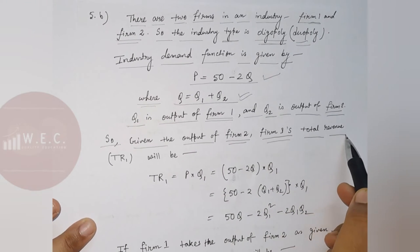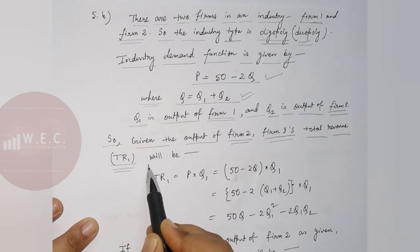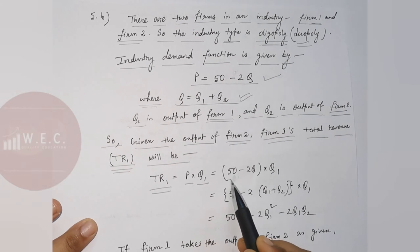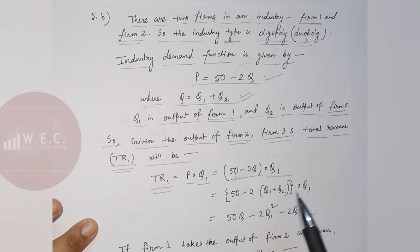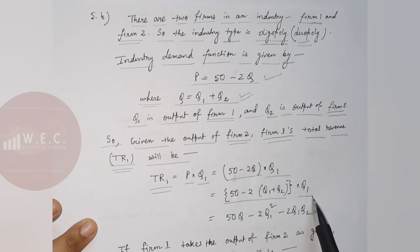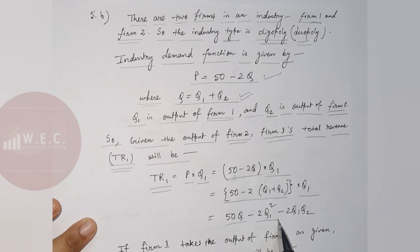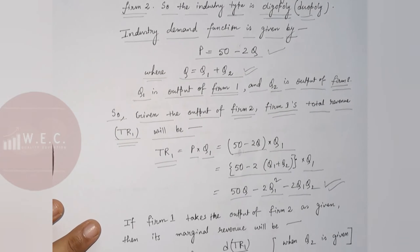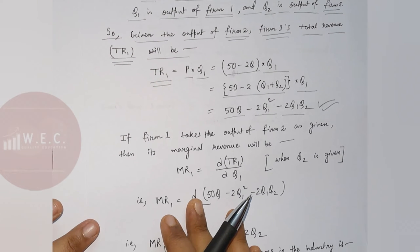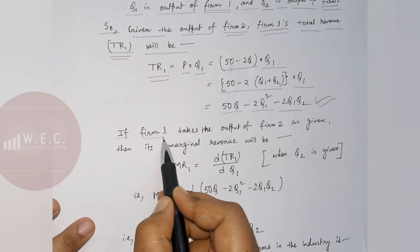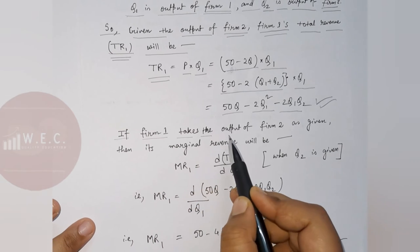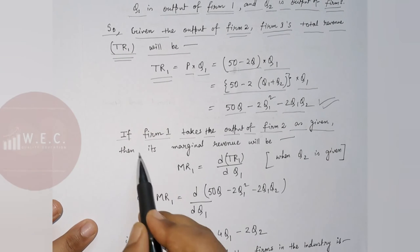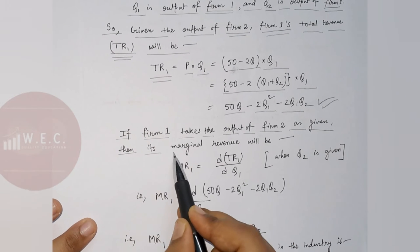Given the output of Firm 2, Firm 1's total revenue TR1 will be TR1 equals P times Q1. Since P equals 50 minus 2Q, we substitute to get the total revenue function of Firm 1. If Firm 1 takes the output of Firm 2 as given, its marginal revenue will be the derivative of TR1 with respect to Q1.